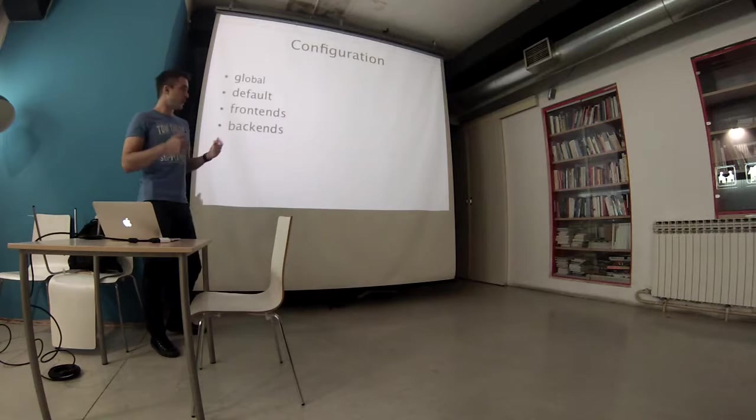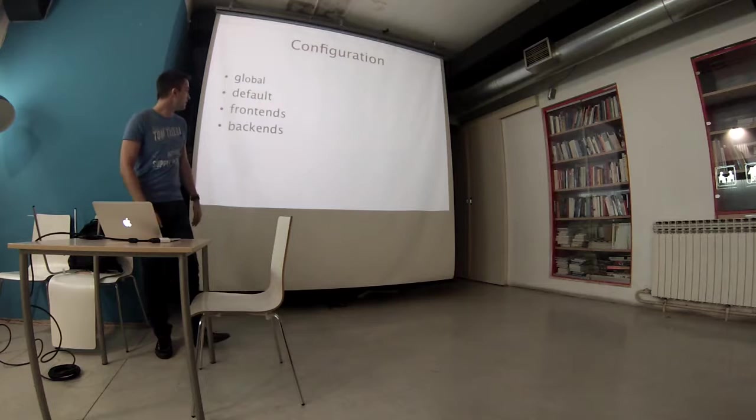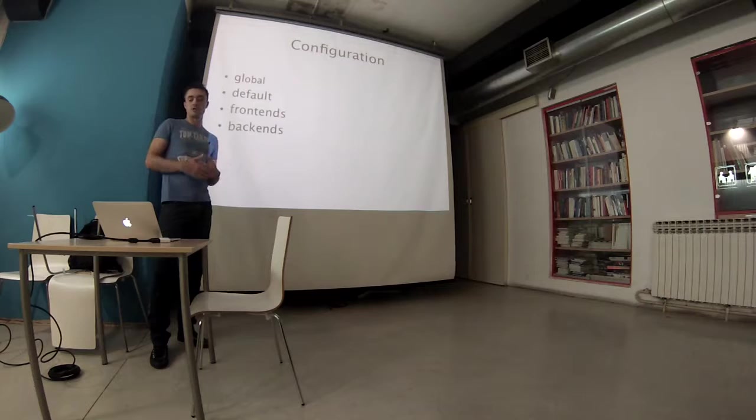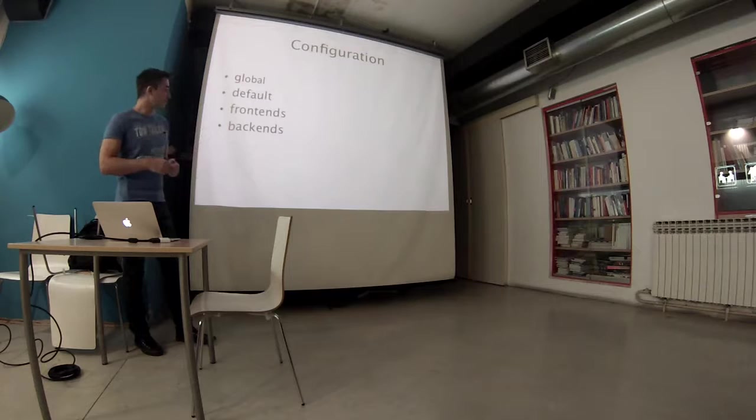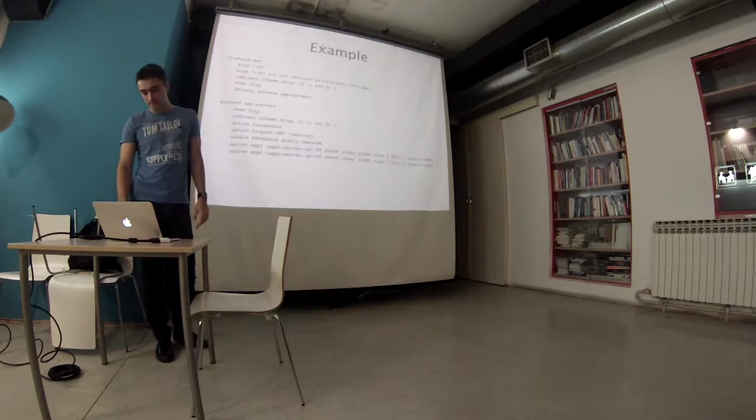So after installation, installation is usually like use your package manager apt-get install or yum or whatever. Then you have to configure it. It has four main sections. One is global, default and these two are the most important ones, front-ends and back-ends. Front-ends, this is the place where you define on which IP address and which port the HAProxy is going to listen for incoming connections. And back-ends is a place where you define all of your destinations where you want to route the traffic that came in through the front-end.